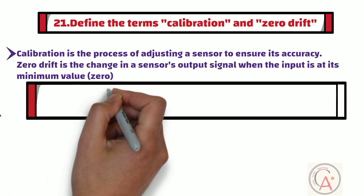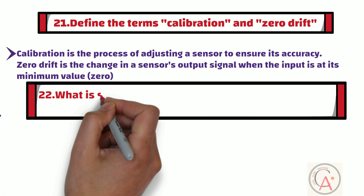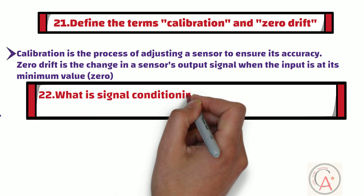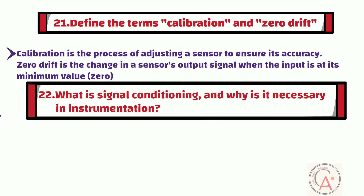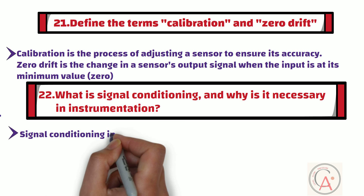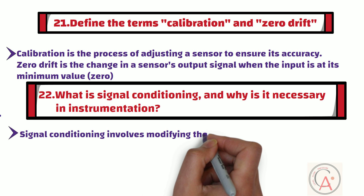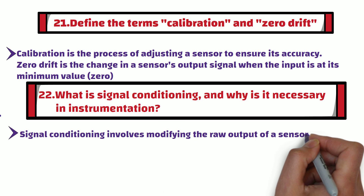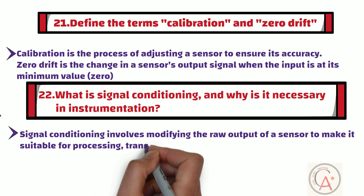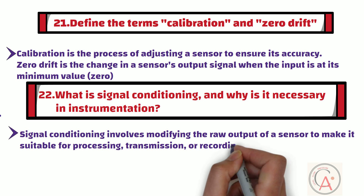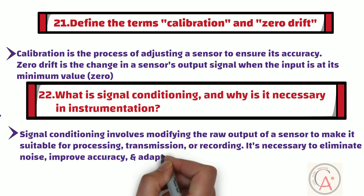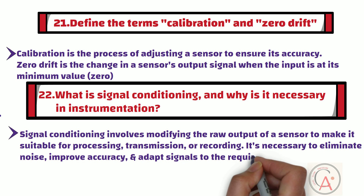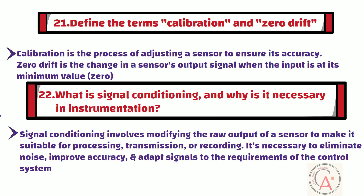The 22nd question is: what is signal conditioning and why is it necessary in instrumentation? Signal conditioning involves modifying the raw output of a sensor to make it suitable for processing, transmission, or recording. It is necessary to eliminate noise, improve accuracy, and adapt signals to the requirements of the control system.